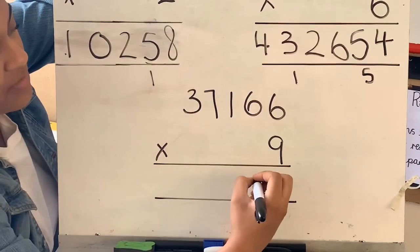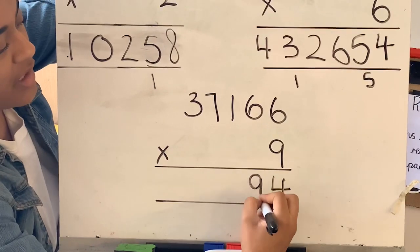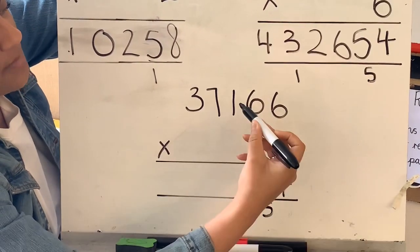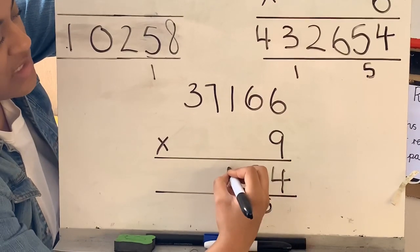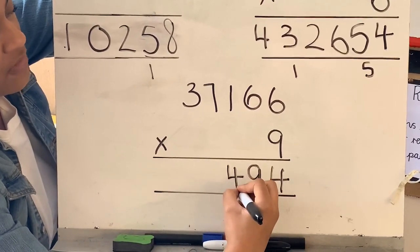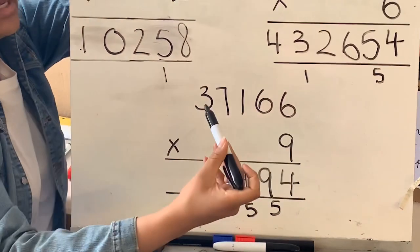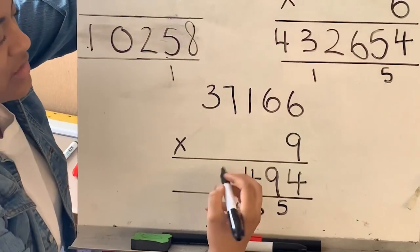9 times 1 is 9, add the 5 is 14. Placing the 4 down, exchange the 1 to the next column. 9 times 7 is 63, add the 1, 64.